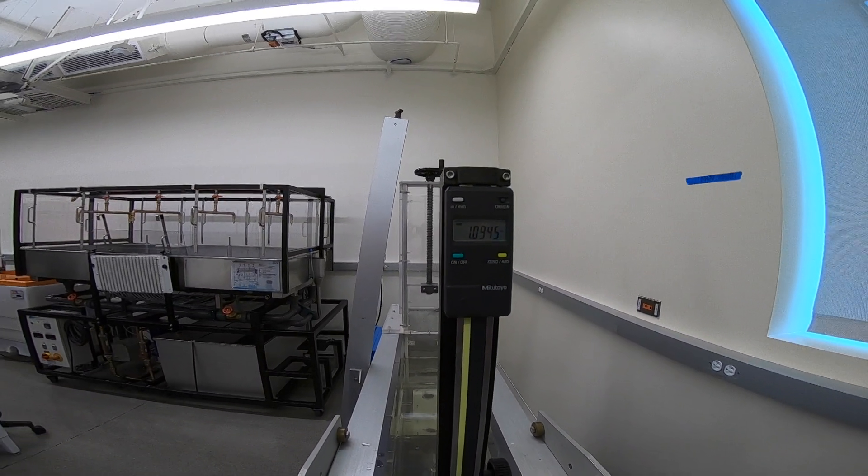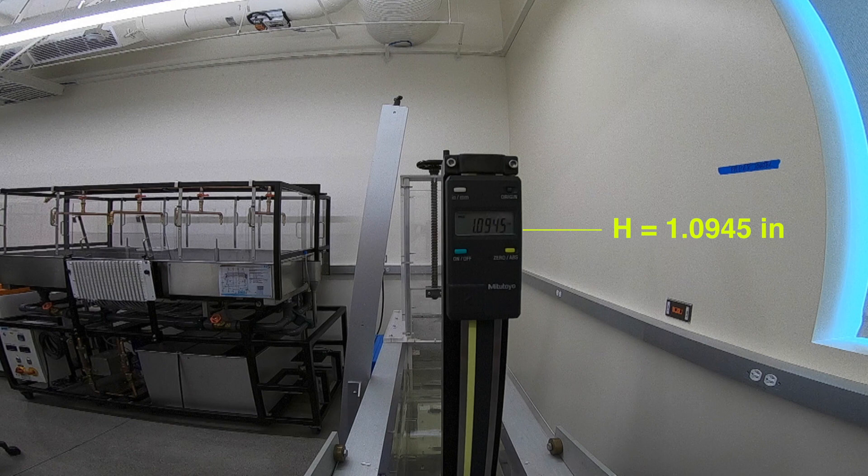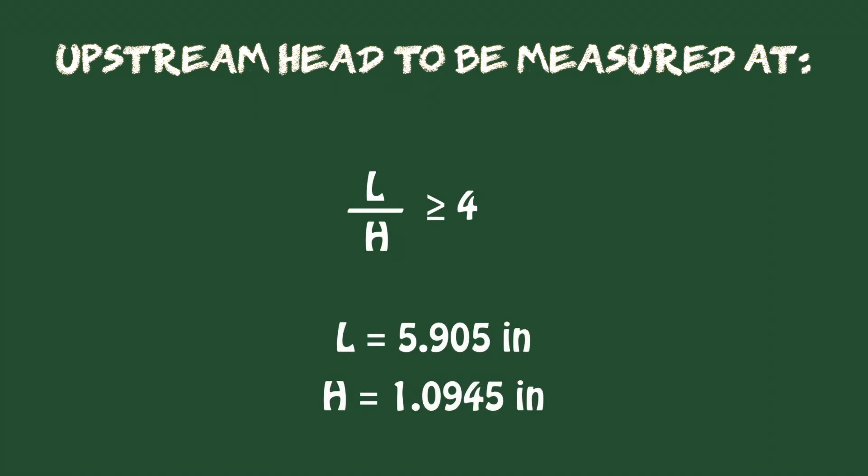The measured hydraulic head is H equal 1.0945 inches, which is less than one fourth of 5.905 inches.